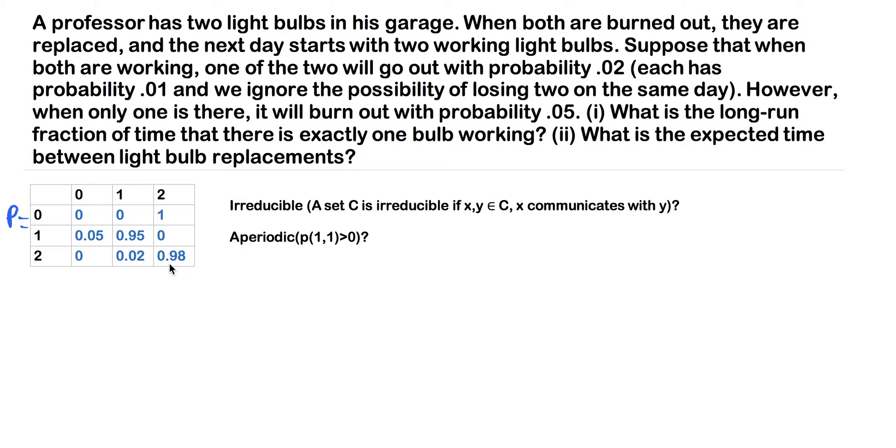Now, if we continue to the second row, if we're starting with one working light bulb, there's a 5% chance that we're going to lose one, so we'll have zero at the end of that day. And there's a 95% chance that, since no light bulbs are being replaced when we start with one, we're never going to end up with two.